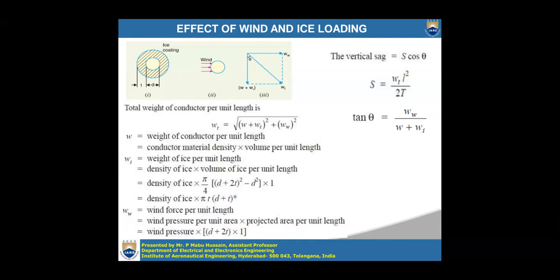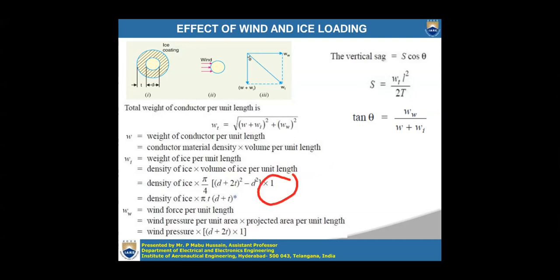If conductor material density and volume per unit length are given, then W = density × volume per unit length. Similarly, the weight of ice per unit length may not be given directly. They may give the density of ice and the volume of ice per unit length, or they may give the diameter of the conductor and thickness of the ice. Depending on what values are given, you use either formula. When diameter d and ice thickness t are given, Wi = density of ice × (π/4) × [(d + 2t)² − d²] × 1.